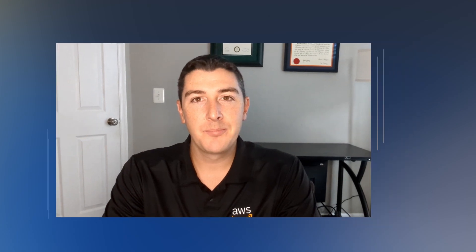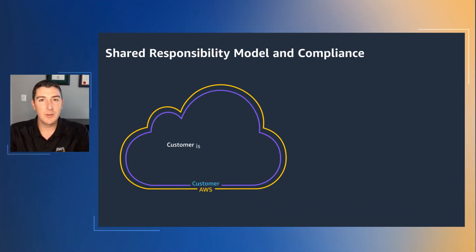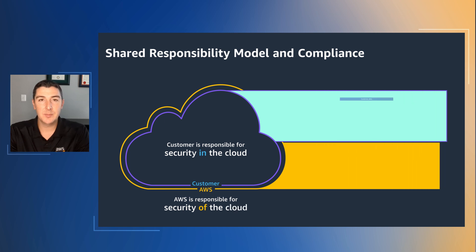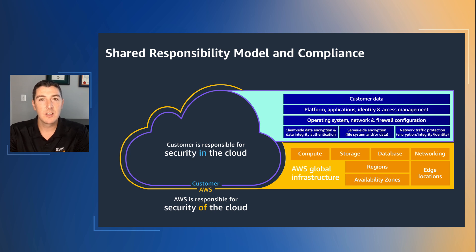I'm sure everyone's familiar with the shared responsibility model diagram. While it has stood the test of time, the number of AWS services has expanded exponentially, offering customers even more options for building everything they need to grow their businesses and meet their mission requirements. So let's jump in and discuss how this diagram might change for each service as various compliance needs arise.